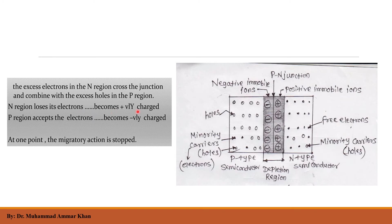When the positive terminal of a battery is connected to the P-side and the negative terminal is connected to the N-side, the diode becomes forward biased and current flows. When the battery is connected, holes and electrons move toward the junction region. When electrons move into the region, the space becomes empty — this region is called the depletion region.